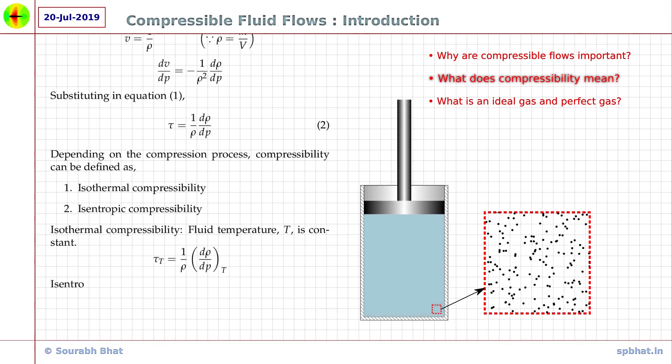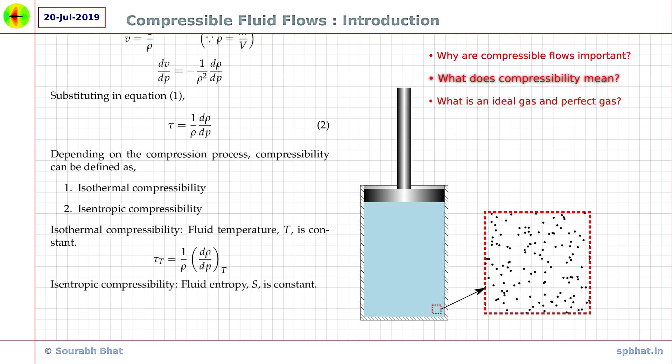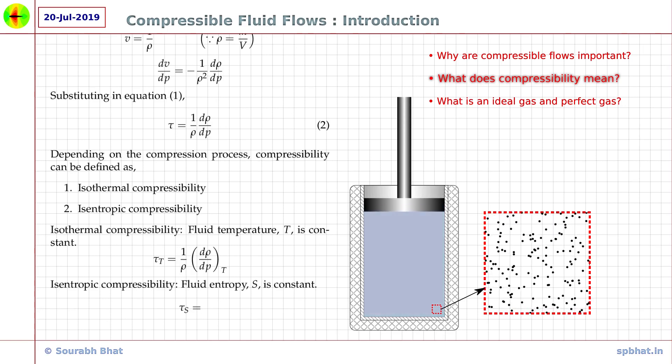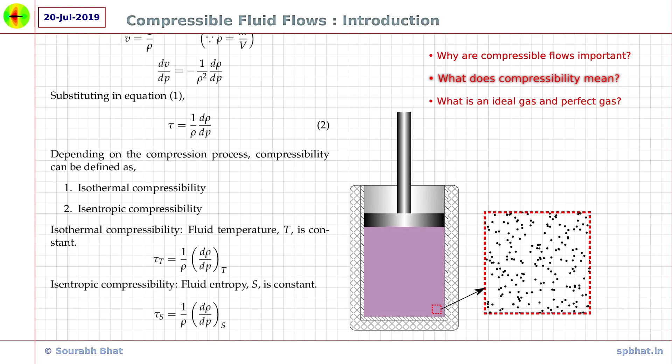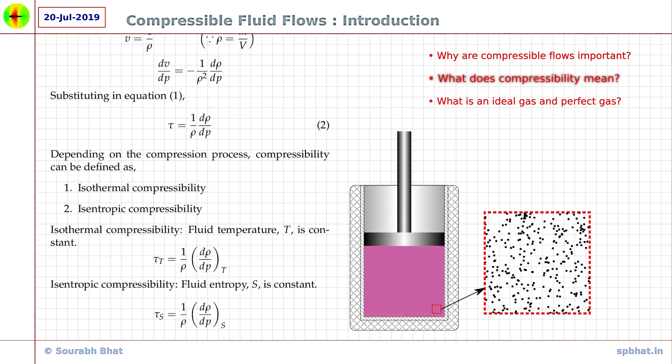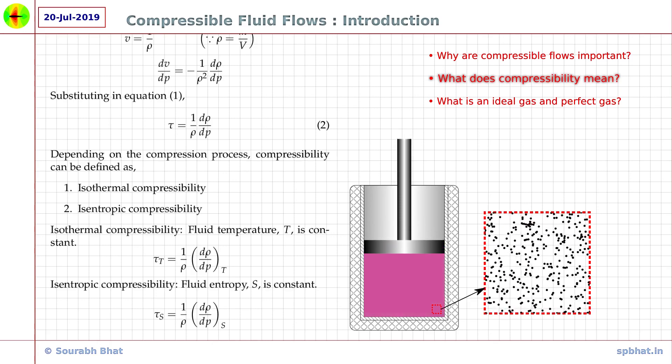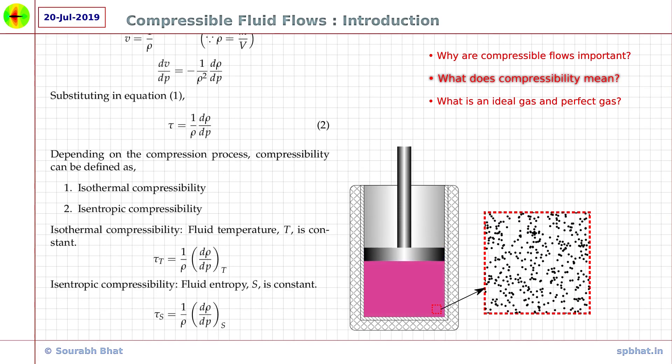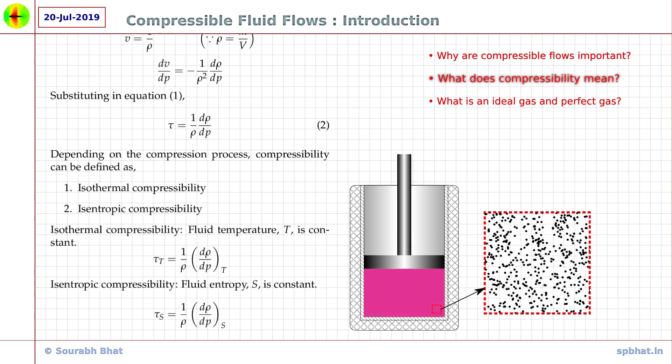The compressibility of fluid when the compression process takes place with constant entropy is known as isentropic compressibility and is written with subscript s. It is therefore mathematically written as tau with subscript s is equal to 1 over rho d rho by dP with subscript s. This process occurs when the walls of the cylinder and the piston are completely insulated and no heat leaves or enters the cylinder.